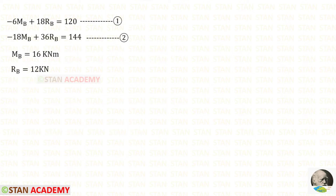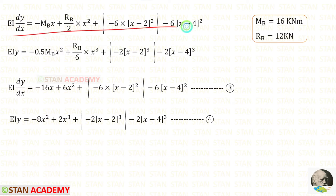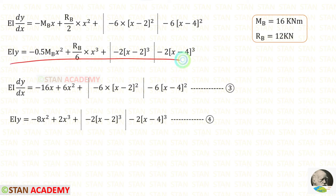Now there are two equations. Using the calculator we can solve both of these equations and get the values of MB and RB. If you do not know how to solve two equations on the calculator, see the description below — there is a link you can click to watch the video. Substituting the values of MB and RB into the slope equation gives equation number 3, and into the deflection equation gives equation number 4.